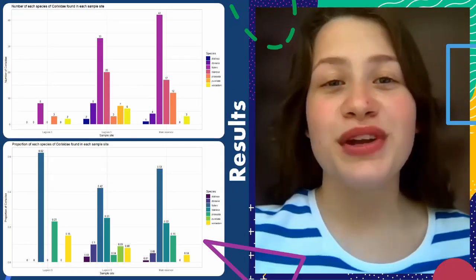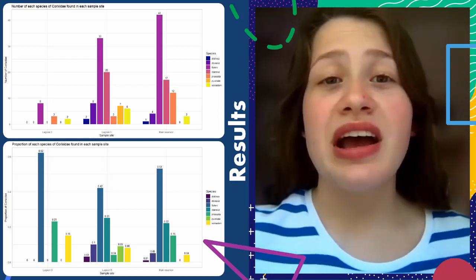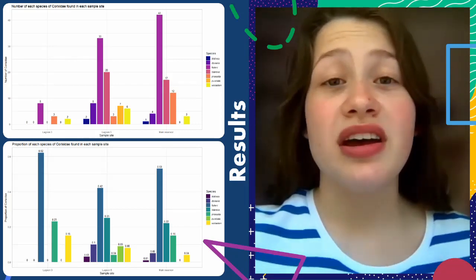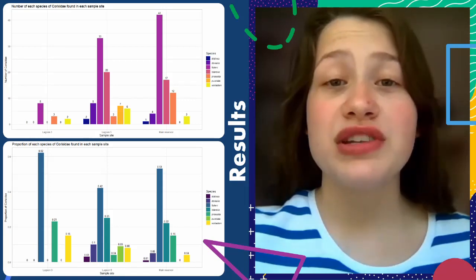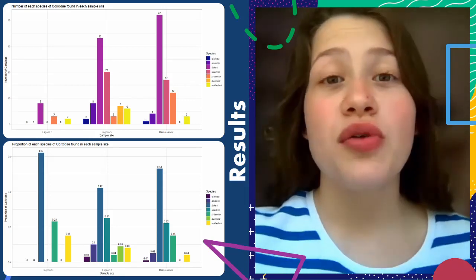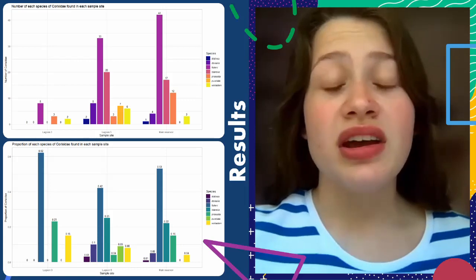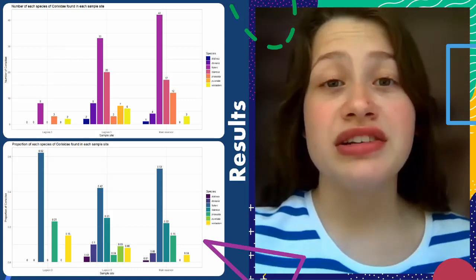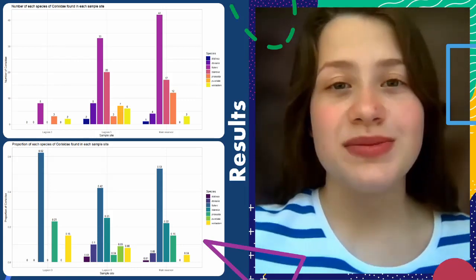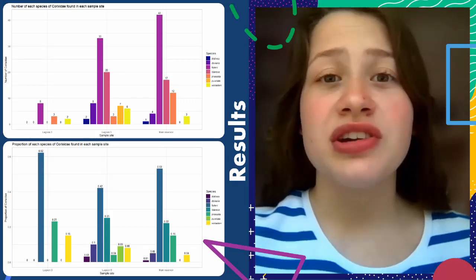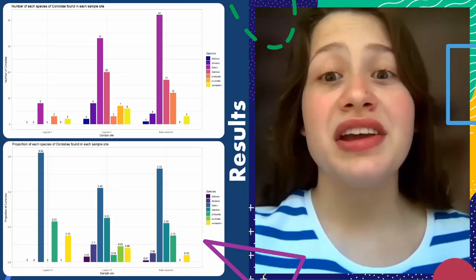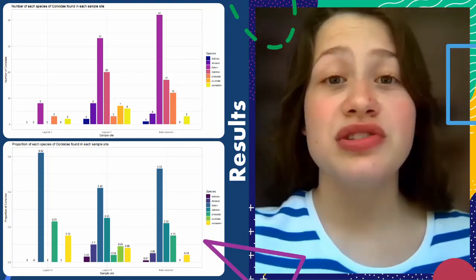Now onto the results. Both bar charts were made by yours truly. It can be seen that Lagoon 3 has far fewer Corixidae in it than the main reservoir or Lagoon 5, and Lagoon 3 only has 3 species present. The main reservoir has 6 species present, and Lagoon 5 has 7 species present. Punctuata is only found in Lagoon 5, whereas Falleni is the most common species across all sites.